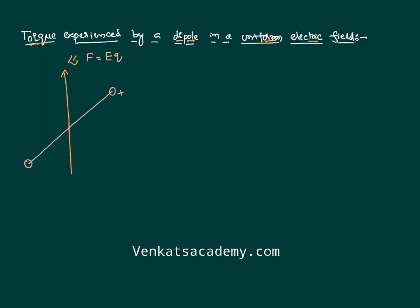Say this is a positive charge and this is a negative charge. A positive charge experiences force along the direction of the field, whereas a negative charge experiences force against the direction of the field. So here there is a force Eq, and here also there is a force Eq. There is no resultant force, so there is no translatory motion — only a turning effect. This body tries to turn, and as a whole the dipole experiences a torque.